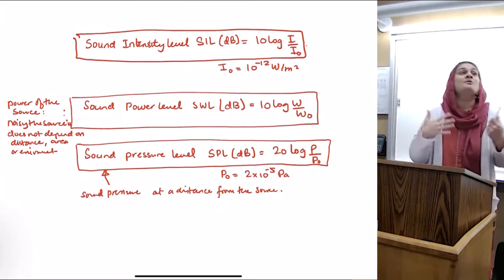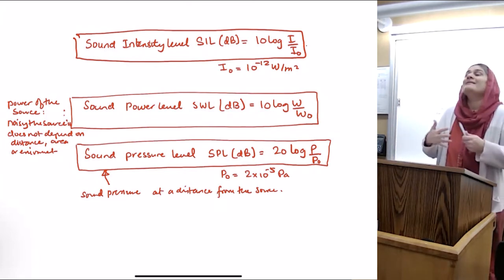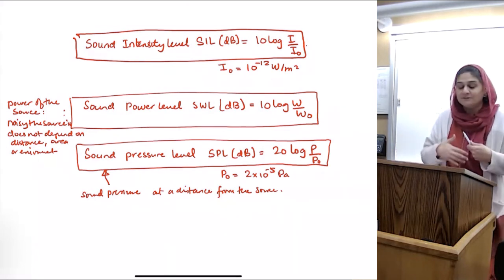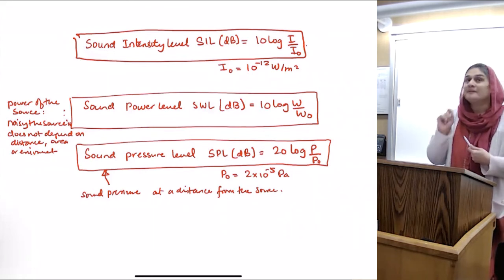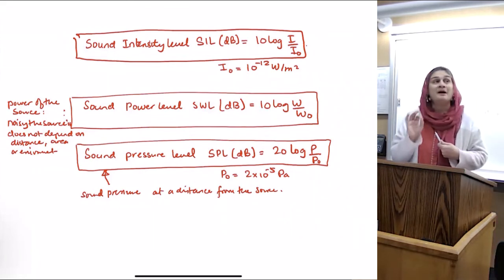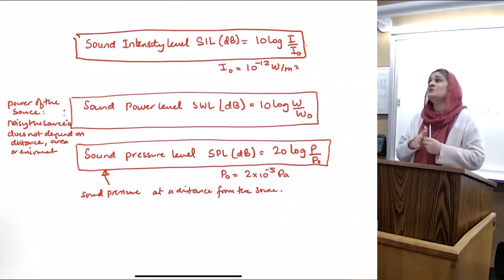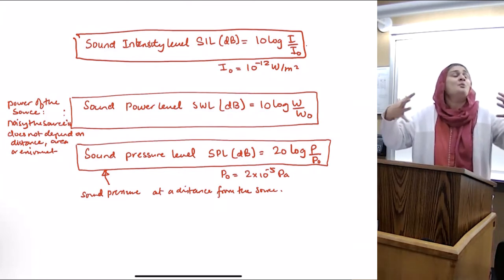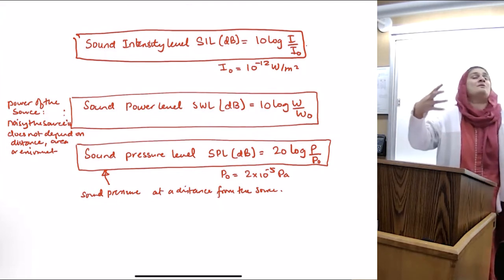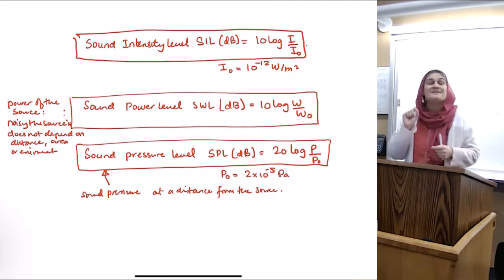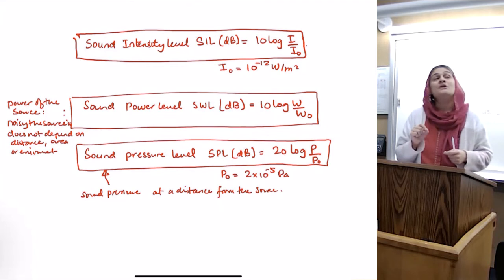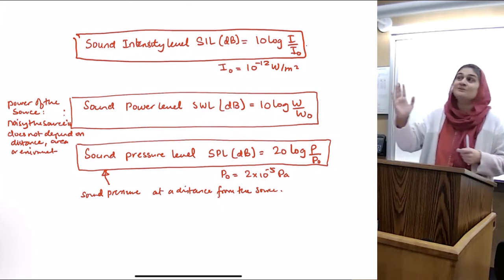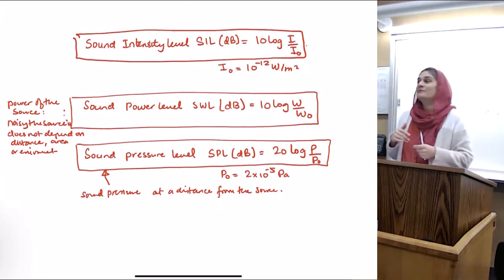Decibel on its own has no value unless it's associated with either intensity level, power level, or pressure level. Be very careful. Sound power level is not something you can measure. It does not depend on distance. It's just how noisy whatever the thing that's making the sound is. Sound intensity level goes down the further you are. Sound pressure level also goes down the further you are.